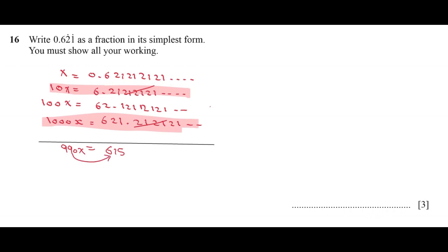Now we will send the 990 by division. x equals 615 over 990, and we have to write it in simplest form, so we will use our calculator.